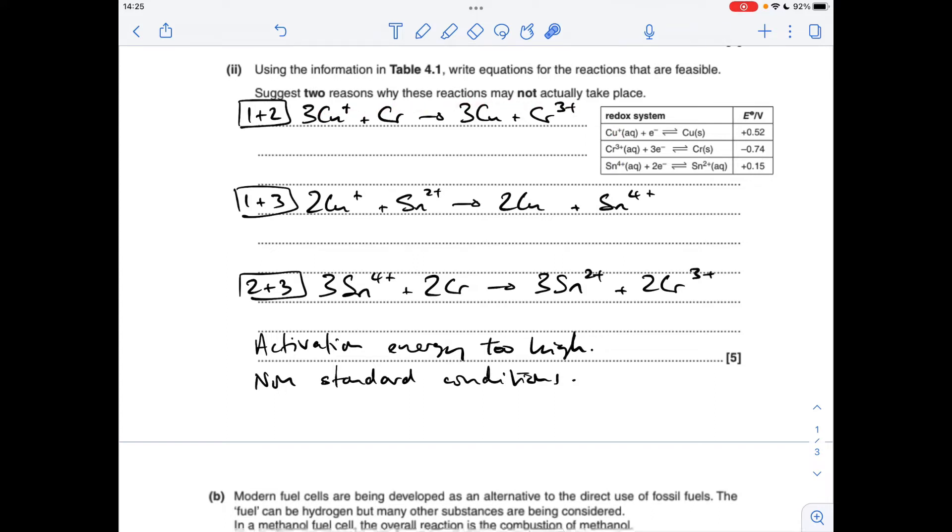One and three next, so again this is more positive than this, so it's going to go forwards, that's going to go in reverse. Need to double this one because two electrons in the Sn4+ 2+ equation, which gives us this one here.